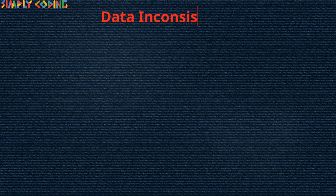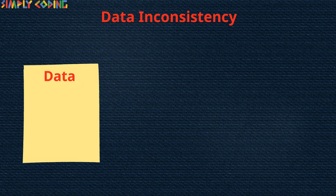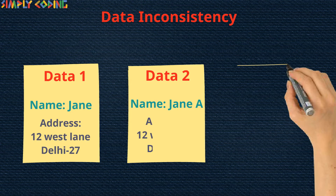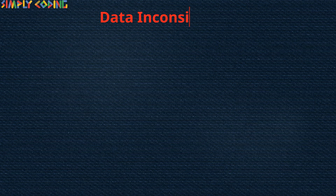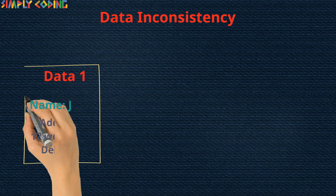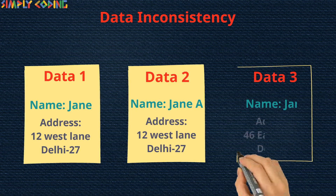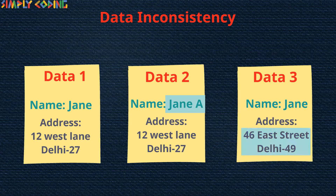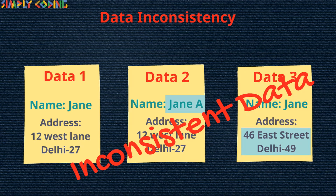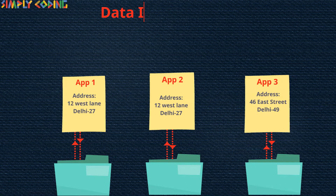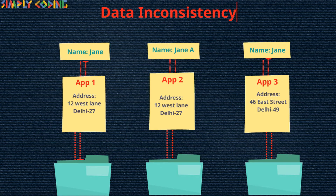Data redundancy leads to data inconsistency. Multiple mismatching copies of the same data is known as data inconsistency. When the redundancy is not controlled, there may be occasions when the two entries about the same data do not agree. At such times, the database is said to be inconsistent. An inconsistent database will provide incorrect or conflicting information.